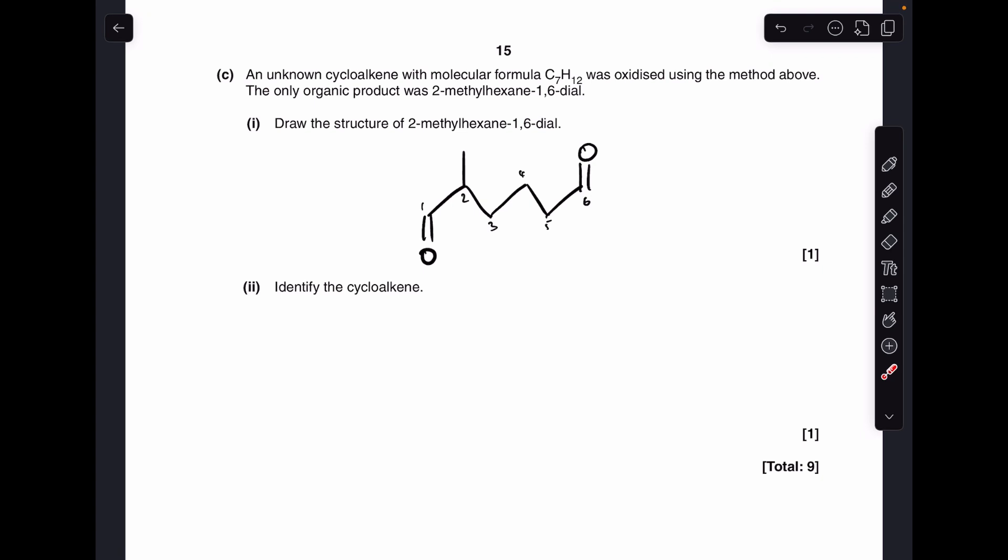And then finally, identifying the cycloalkene that's produced this di-al. Well, imagine connecting these two carbons back together to create the ring, and where you've connected it, it's going to be a C-C double bond. So it's going to look like that. And then just imagine the reverse, you break that double bond, the ring opens up, and you would generate that.